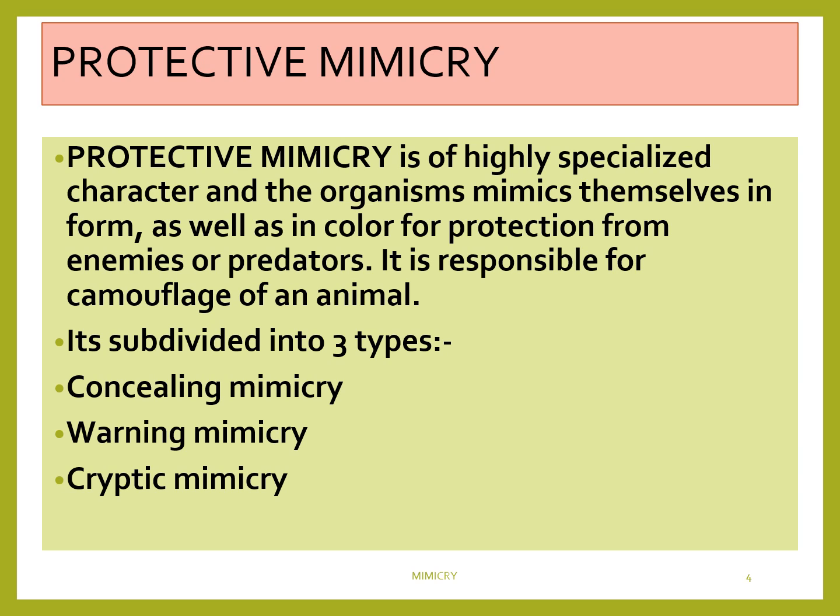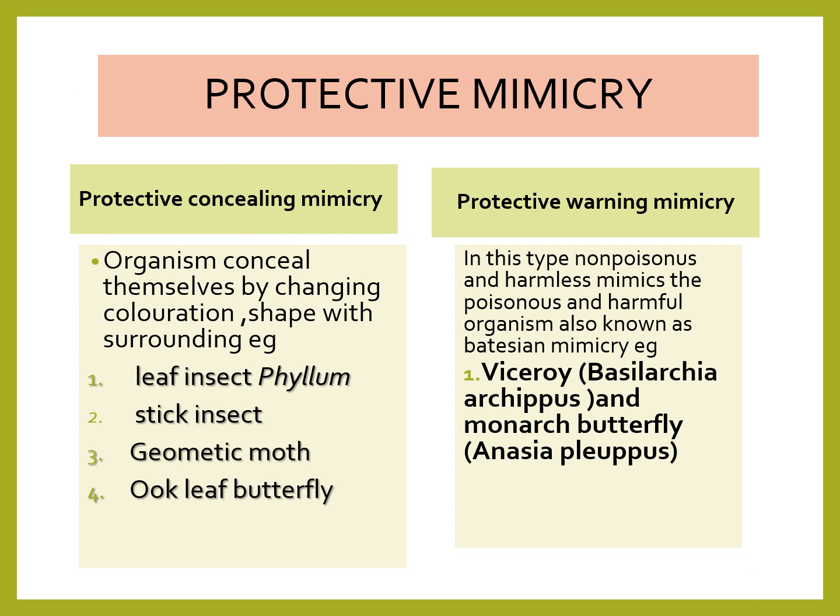Protective mimicry is of three types: concealing, warning, and cryptic mimicry. Number one is protective concealing mimicry, where the organism conceals itself by changing coloration, shape, and surrounding. Example is phylum, that is the leaf insect or the stick insect. Protective warning mimicry: in this case, a non-poisonous or harmless organism mimics the poisonous and harmful organism. An example is Batesian mimicry.